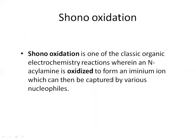Next is Shono oxidation. Shono oxidation is a classic organic electrochemical reaction where an N-acyl amine is oxidized. After oxidation, an iminium ion is formed. An oxidizing reagent is added, and that N-acyl amine reacts with the oxidizing reagent. This oxidizes the N-acyl amine, and the product is an iminium ion which can be captured by various nucleophiles to give numerous types of products.